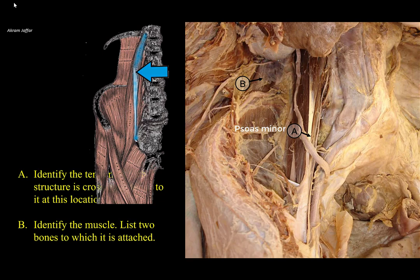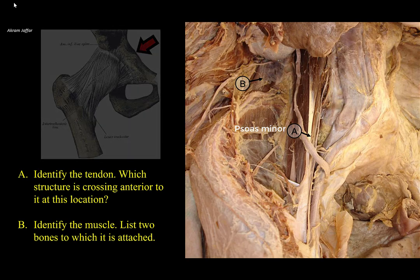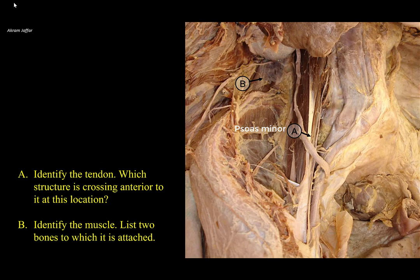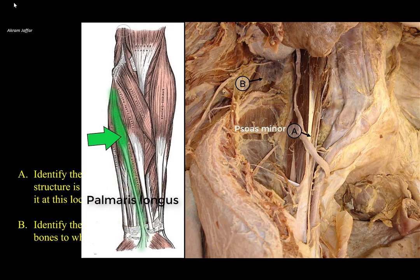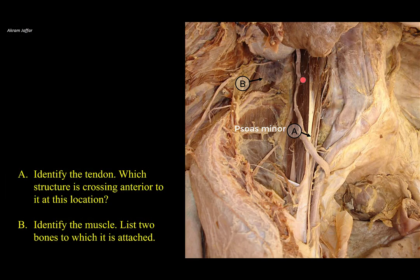The psoas minor tendon inserts into the iliopubic eminence. The muscle, being slender with a short belly and a long tendon, is morphologically similar to two other muscles: palmaris longus in the forearm, and plantaris in the leg. All have a short belly and long tendon, and all start with the letter P. The structure crossing the tendon at this location is the ureter — this is the abdominal part of the ureter, and as you can see, it descends retroperitoneally on the medial aspect of the psoas major muscle, coming from the kidney.